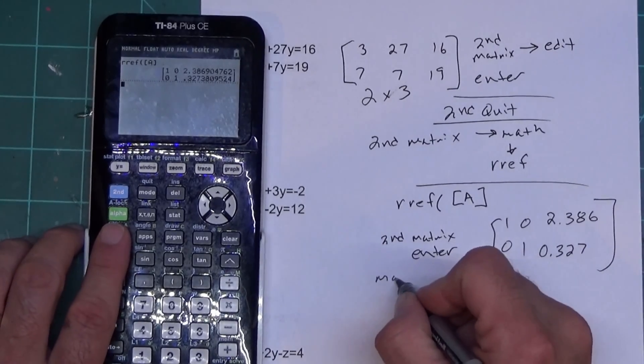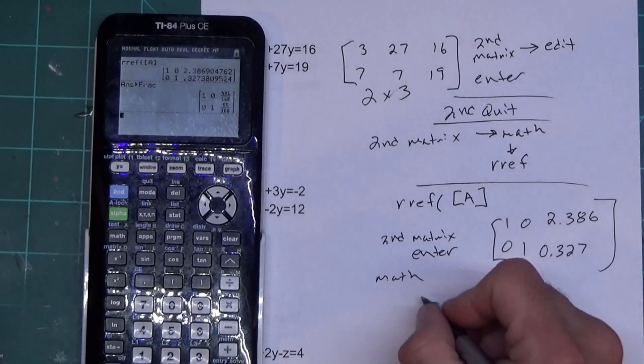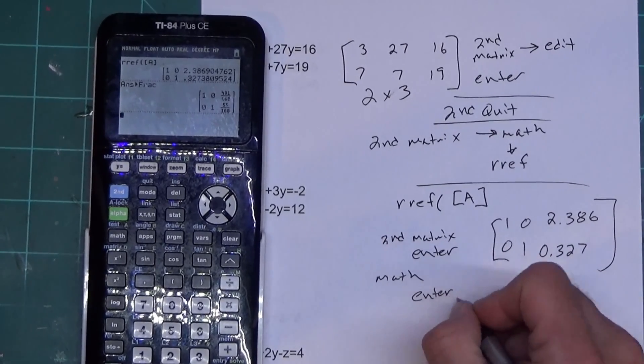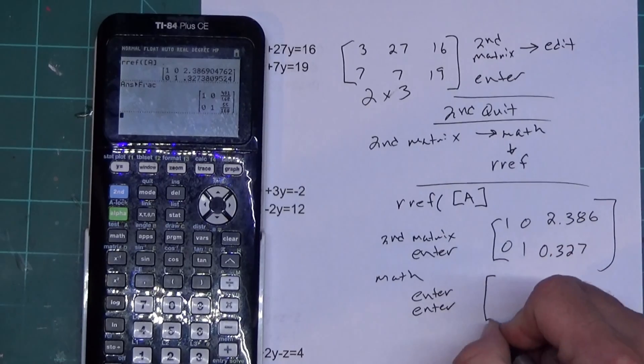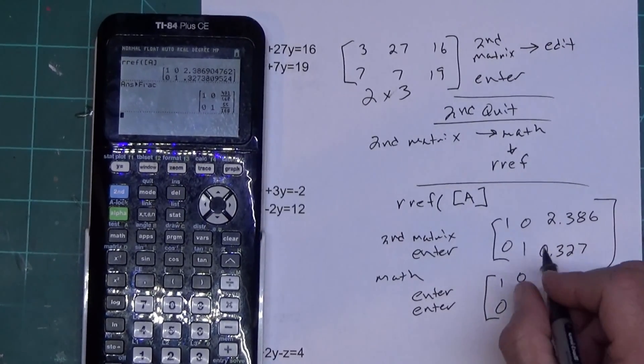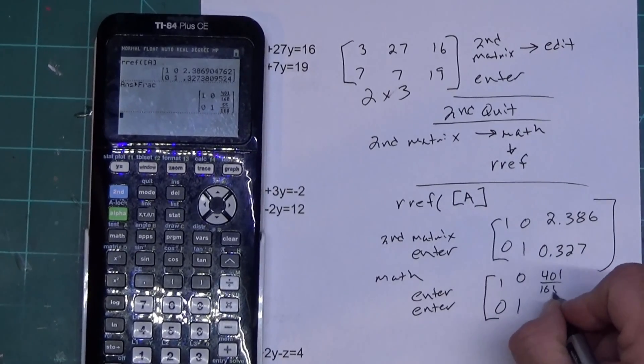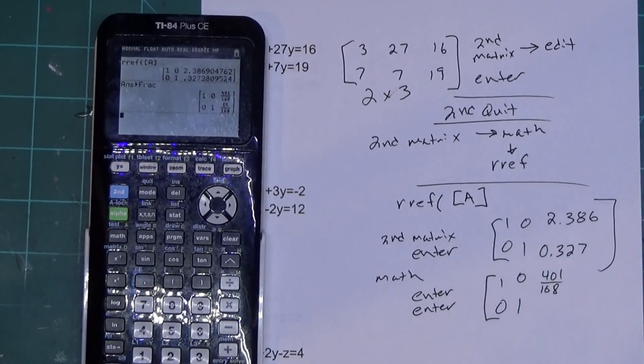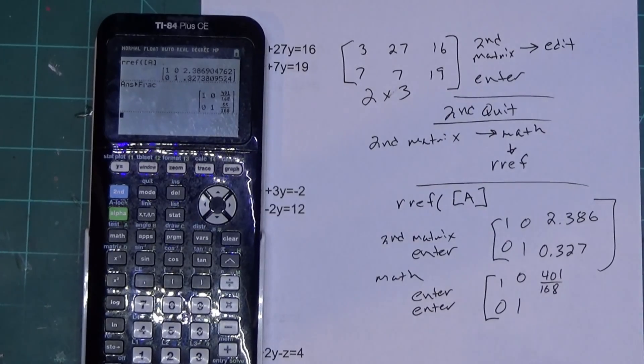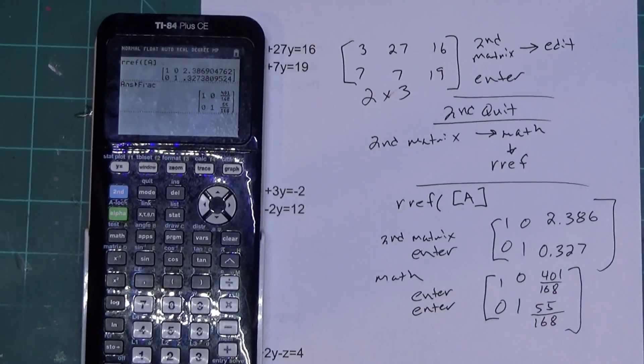You press the math button and just press enter twice. And that gives me the matrix without the ugly decimals. And I've got 401 over 168. And some of you are probably wishing you had the decimals right now because this isn't so nice.